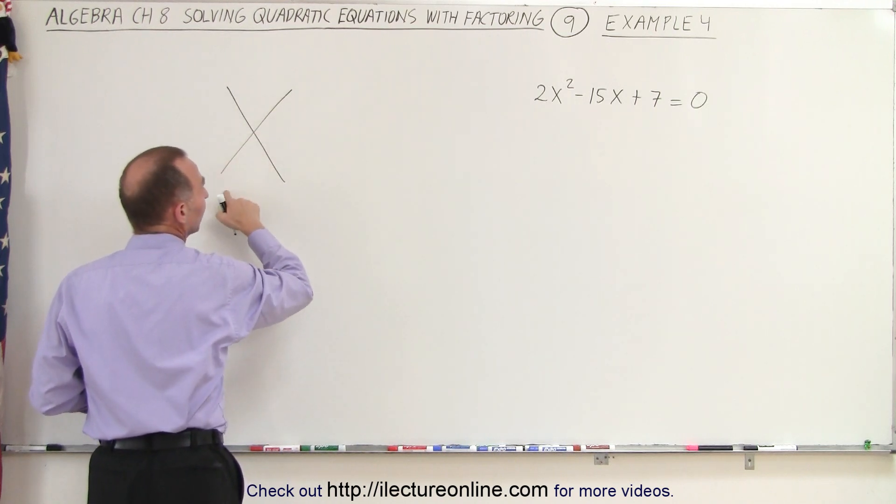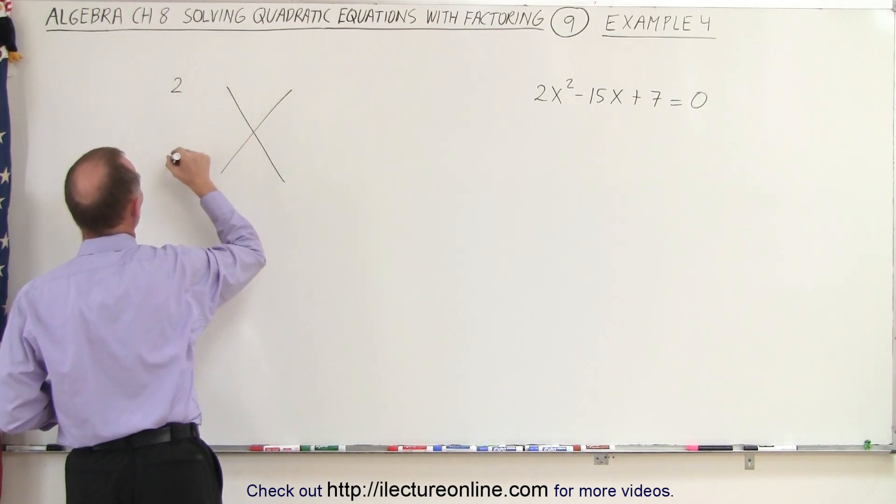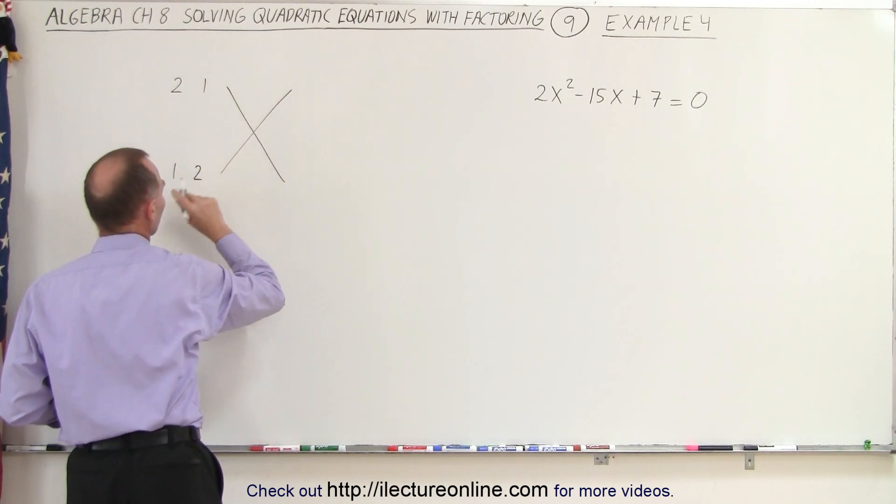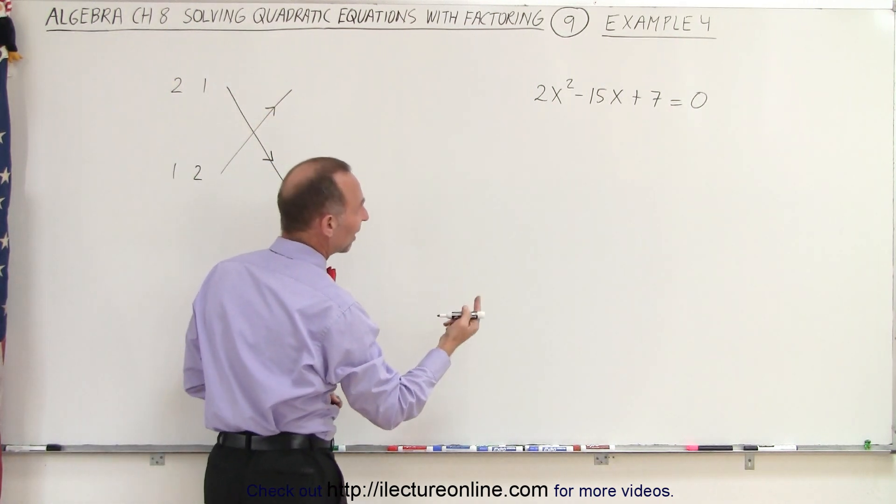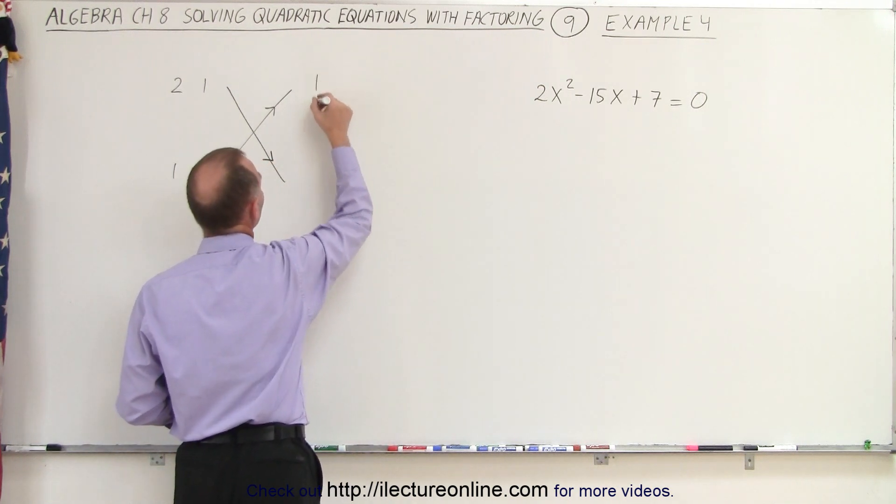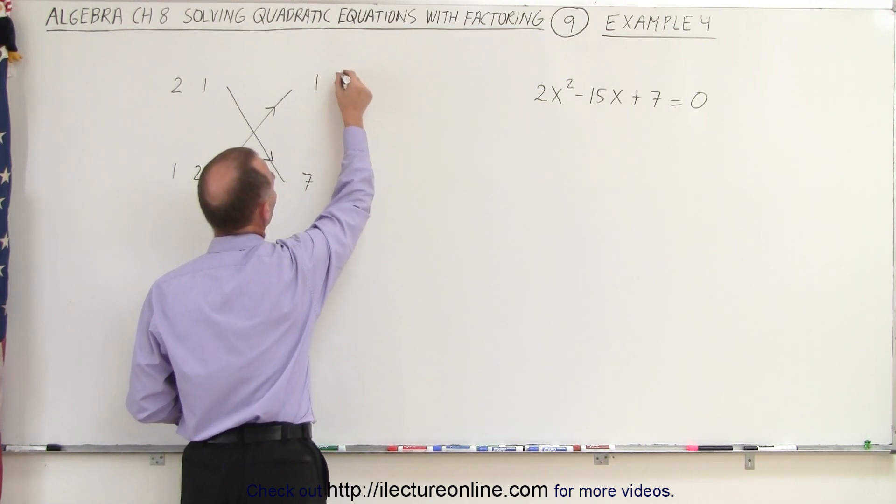So in the front, we have the possibility of 2 times 1 or 1 times 2. So there's only two possibilities. On the back side, we have 7, which can only be obtained by 1 times 7 or 7 times 1.